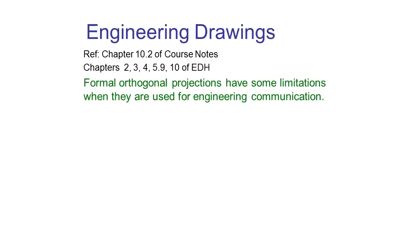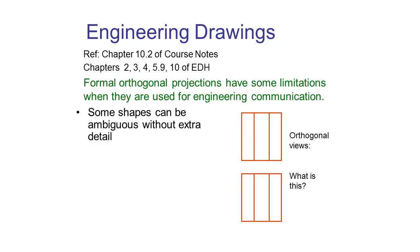In the last set of videos we covered orthogonal projections, however these projections may have some limitations when they're used for engineering communication. For example, we've got two perfectly legitimate orthogonal views and any extra views might not add any extra detail, but it's ambiguous as to what it could be. There are several different shapes that this could actually be.